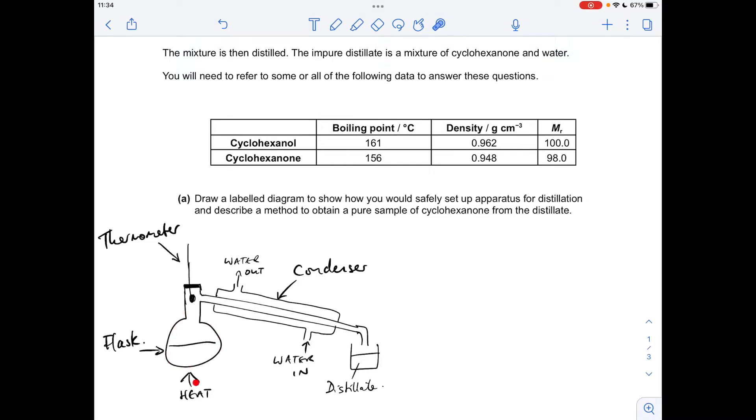We've got a flask, a heat source, a thermometer. So the bulb of the thermometer should be in line with the exit for the condenser. Obviously that's the condenser.